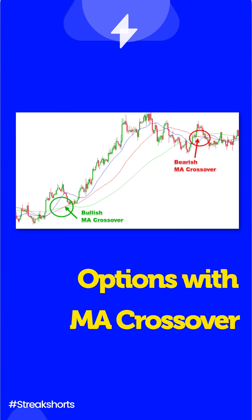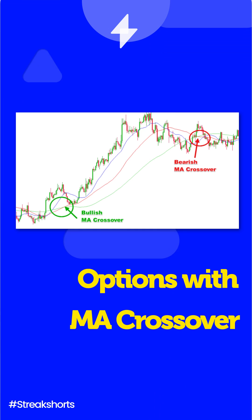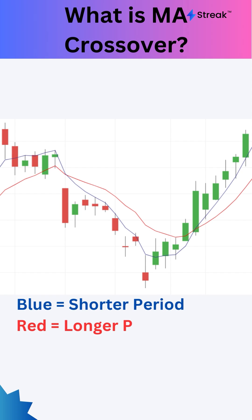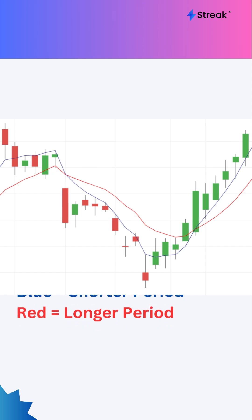Hello everyone. In this video, we are going to learn how to create and backtest an option strategy based on moving average crossovers. Moving average crossover is a trading technique that identifies trends and probable entry and exit points by comparing two moving averages with different time periods. When the shorter moving average crosses above the longer moving average, it indicates bullishness, while crossing below the longer moving average indicates bearishness.